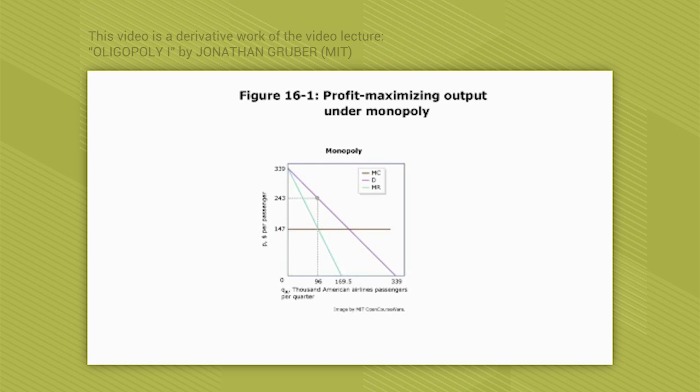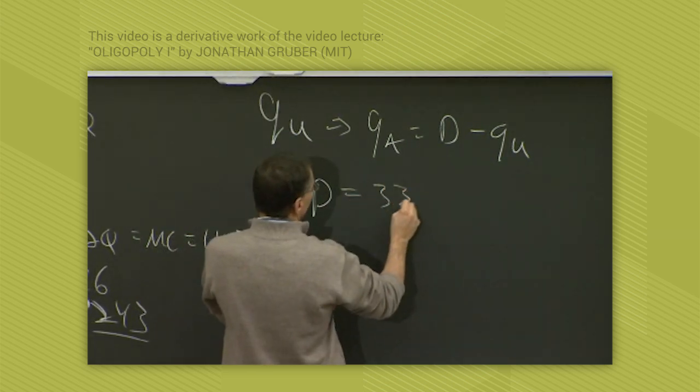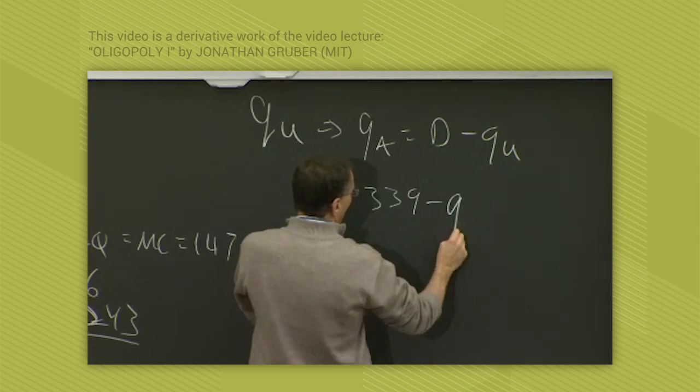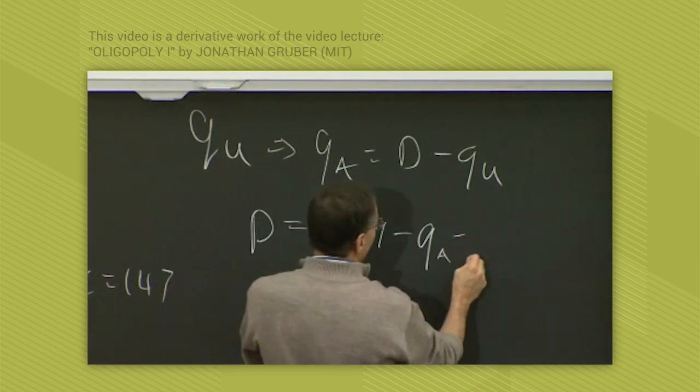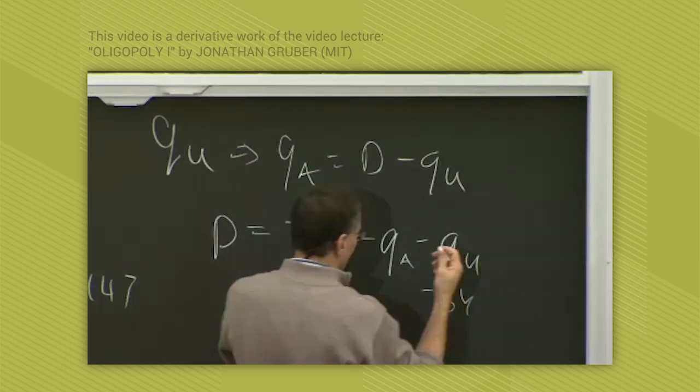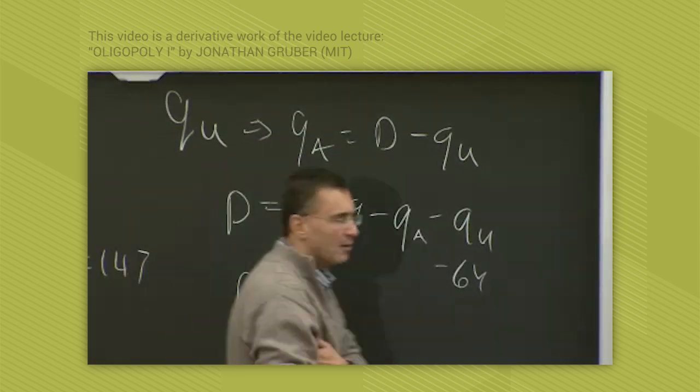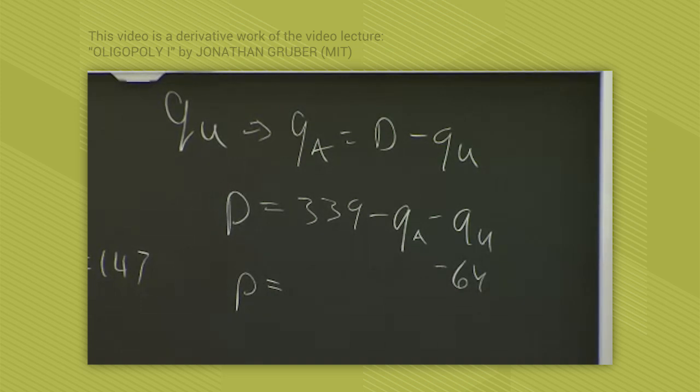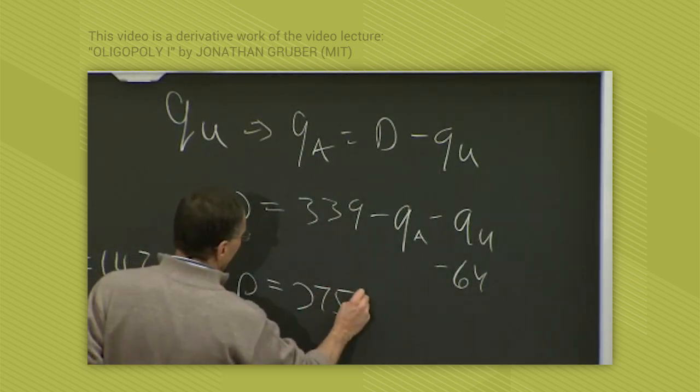then my residual demand is that price equals 339 minus the quantity I sell, Q sub A, minus Q sub U, which I think is 64,000.